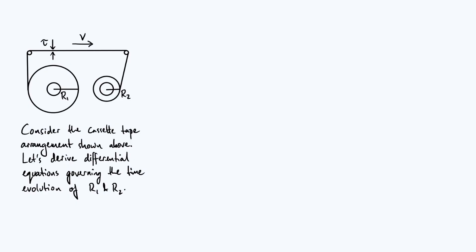So the goal of the video is going to be to derive some differential equations that describe how the radii of the two spools, R1 and R2, as defined on the diagram, evolve over time.